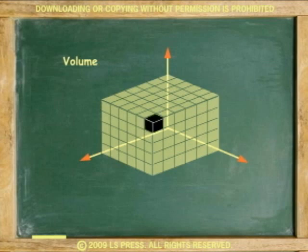In this particular example, the top layer has 6 times 6 or 36 cubes. Because there are five layers of 36 cubes each, then the total volume is 36 times 5 or 180 cubic units.